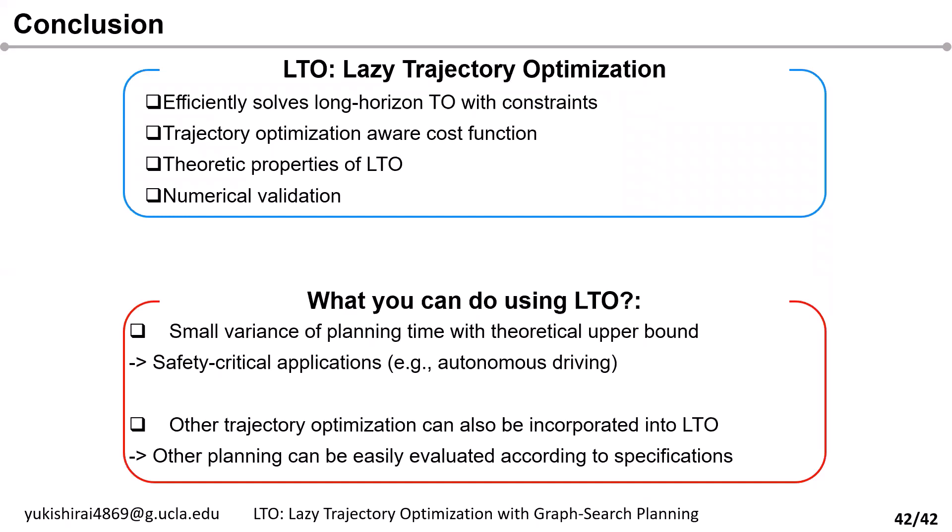In conclusion, we formulate LTO to solve long horizon trajectory optimization with much decreased planning time, while considering the difficulty of solving TO and updating the graph structure. We propose a new framework that can solve TO lazily. We also have several formal analyses in the paper showing time and space complexity of LTO as well as guaranteed sub-optimality. We verified our algorithm for two different motion planning problems involving expensive TO computation. Because LTO has small variance of planning time, we think it can be used for safety-critical applications. Since other trajectory optimization methods can be incorporated into LTO, users can easily replace our choice of TO with their own based on user specifications.